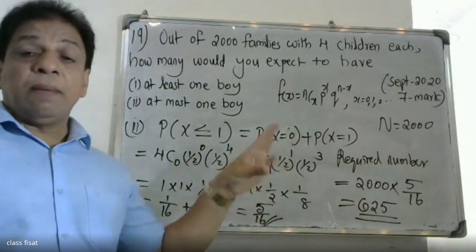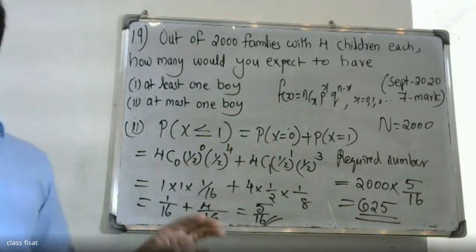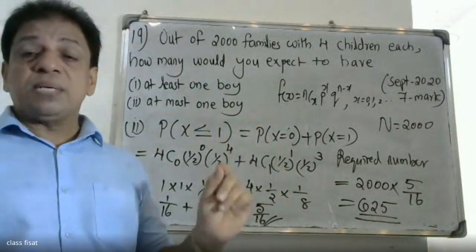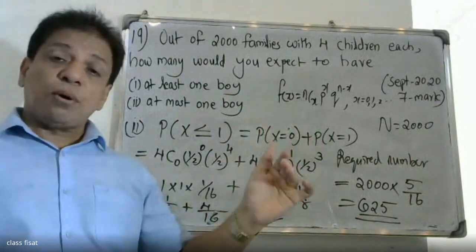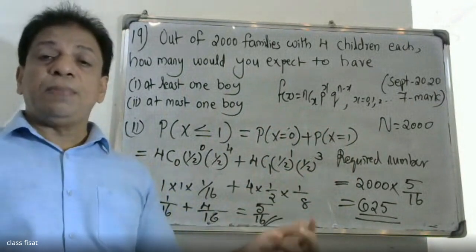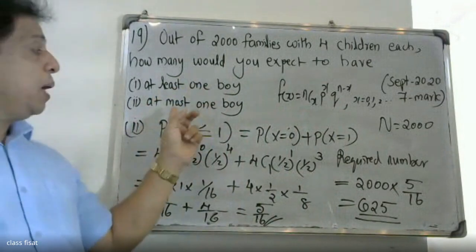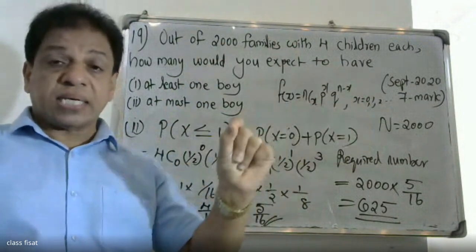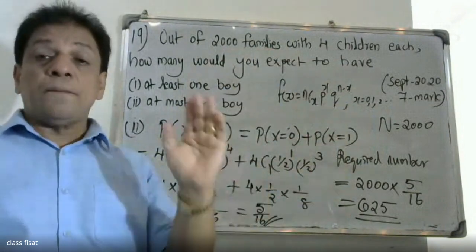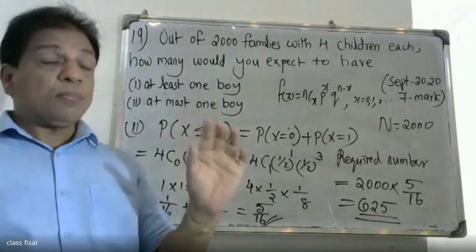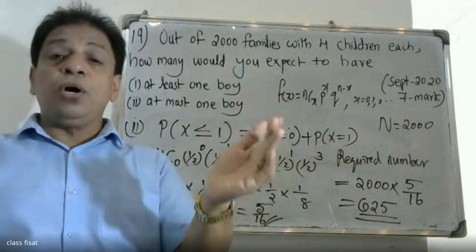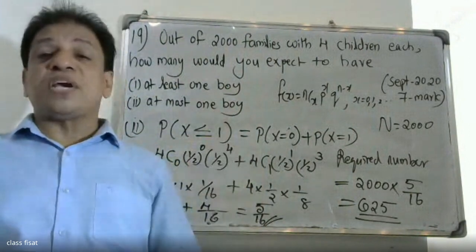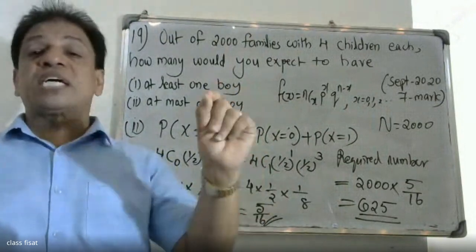The binomial distribution formula is nCx × p^x × q^(n−x), with n = 4, p = 1/2 (probability of success), and q = 1/2 (probability of failure). At least one boy means P(X ≥ 1); at most one boy means P(X ≤ 1), where x can take values 0, 1, 2, 3, or 4. For at least one boy, P(X ≥ 1) = 1 minus P(X = 0).